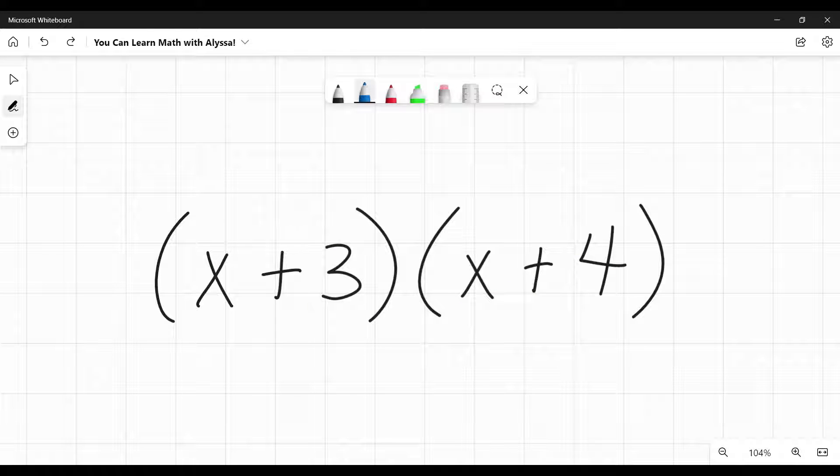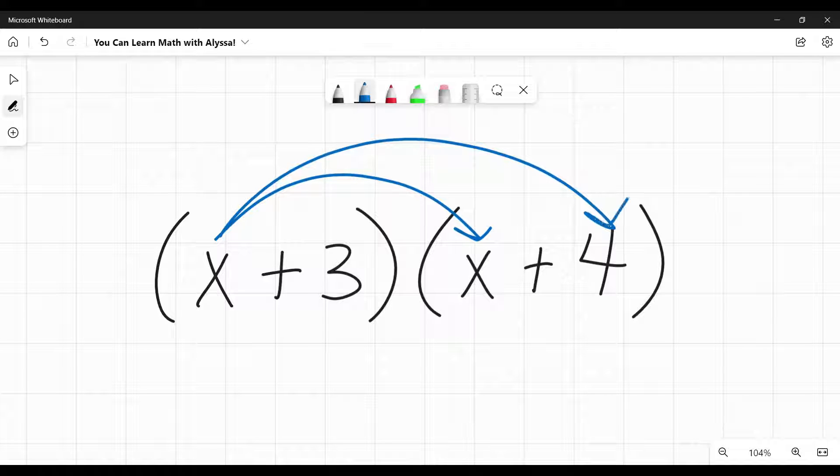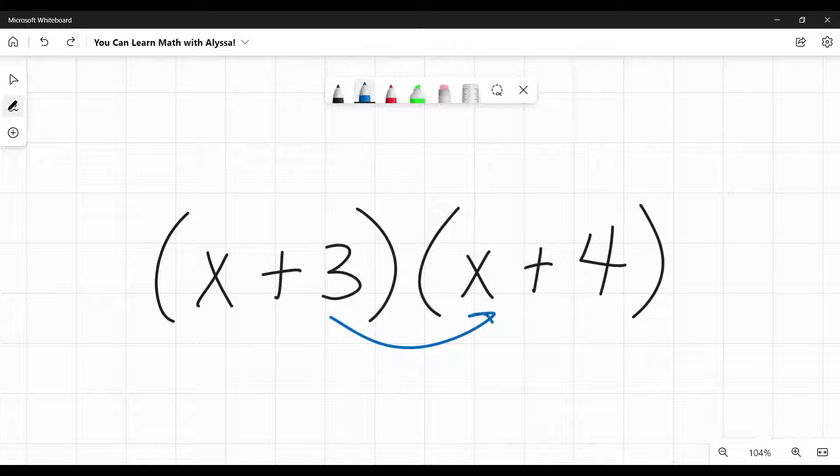To multiply two binomials together, you're going to want to use your distributive property, by which I mean you take each individual term in the first binomial and then one by one multiply it by every term in the second binomial. Then you're going to add all like terms together if there are any, and that will be your final answer.